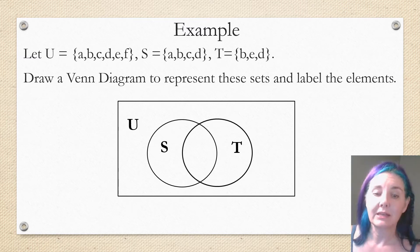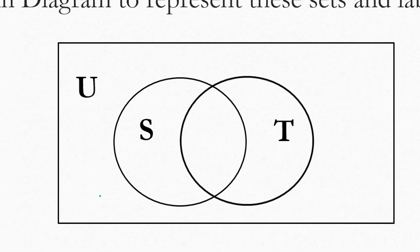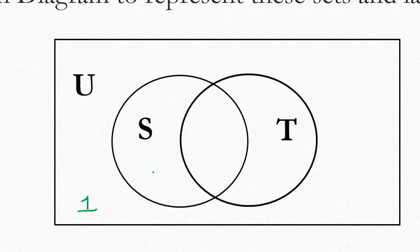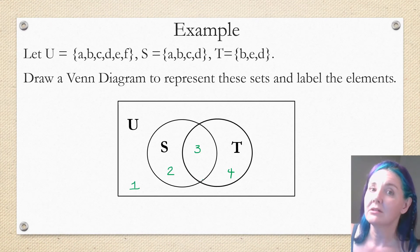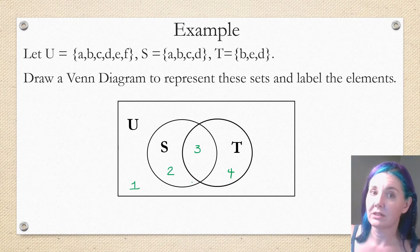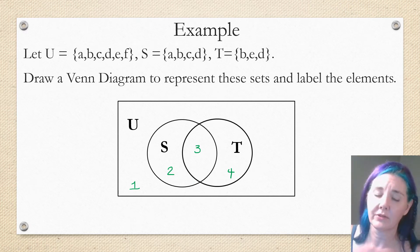Now notice that when we placed these sets into the Venn diagram, it had the effect of dividing the set U into four different regions. We have region 1, region 2, region 3, and region 4. I've only put these numbers here so that I can talk to you about the regions and you know which region I'm referring to. So it's not going to be part of our final answer.